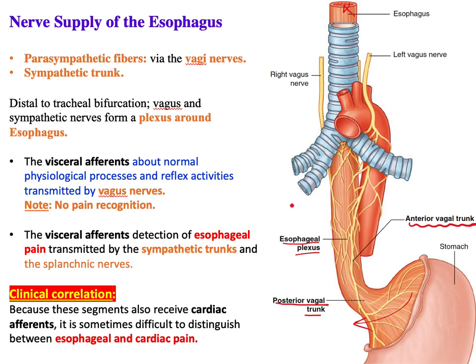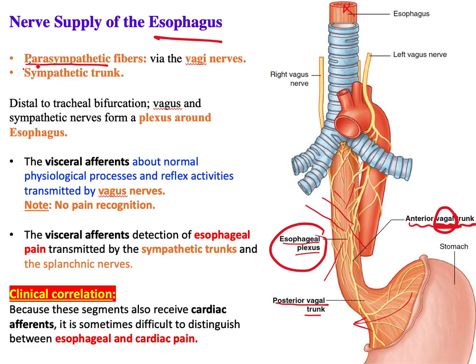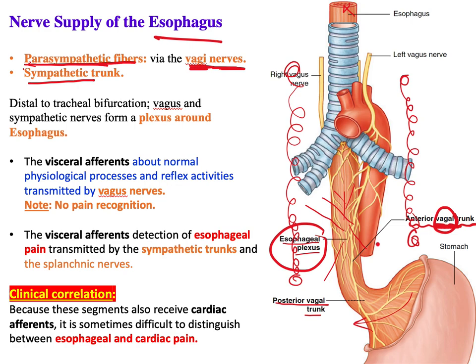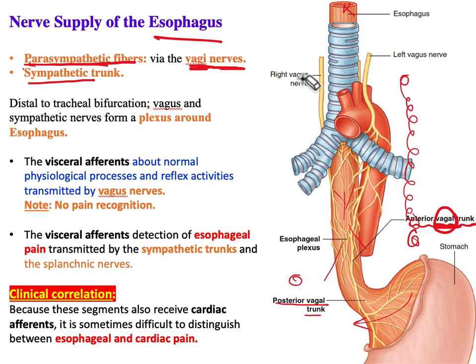The esophageal plexus is not formed by the vagal trunks alone — parasympathetic fibers from the vagus nerve — but also includes sympathetic fibers from the sympathetic trunk. So the innervation of the esophagus is both parasympathetic from the vagus nerve and sympathetic from the sympathetic trunk located on each side of the vertebral column.